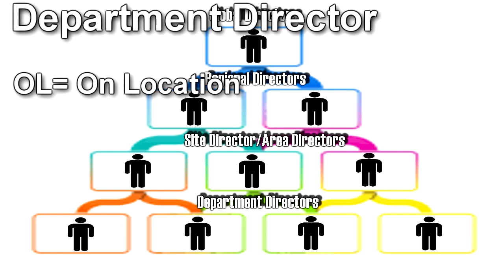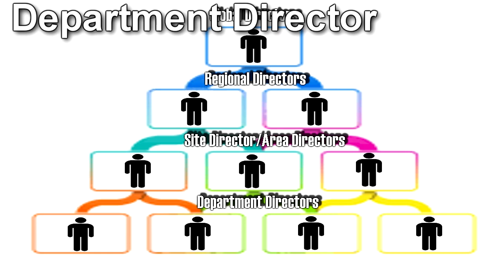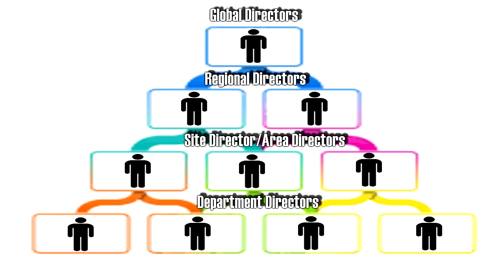Department Director: The Department Director is in charge of directing the goals, policies, and responsibilities of a department within a site — such as security, research, medical, technical and engineering, etc. Department Directors are usually raised to Level 4 clearance and assigned a branch code relevant to whichever department they are in charge of. The Department Directors of a given site constitute its site management team, which answers to and advises the Site Director.